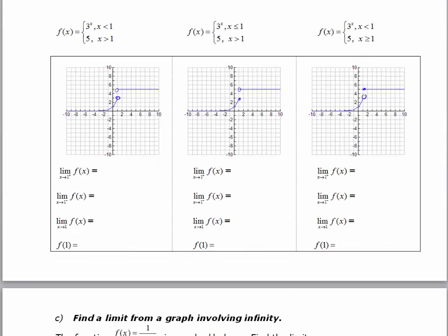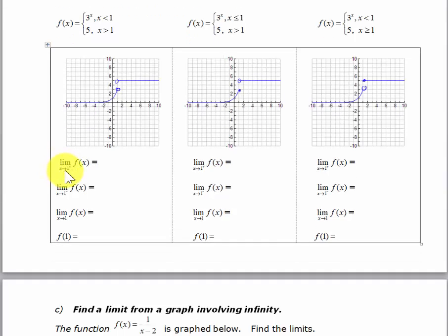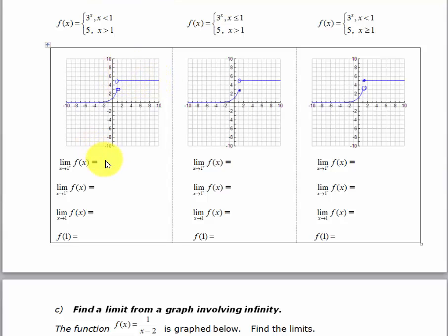The first one: we've got the limit as x approaches 1 from the right. As I let my x value approach 1 from the right, I'm on the constant function, because that function is for values that are greater than 1. So if I'm coming from the right, I'm looking at this line, and the y value I'm approaching is 5.